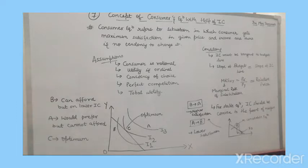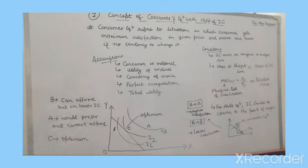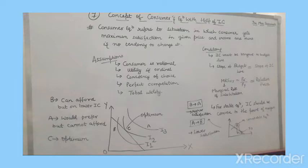Now let's look at the diagram. So here, as you can see what we have drawn, in this case, we have taken three points: A, B, and C. We have taken three points basically — A, B, C. Point C is our optimum choice.